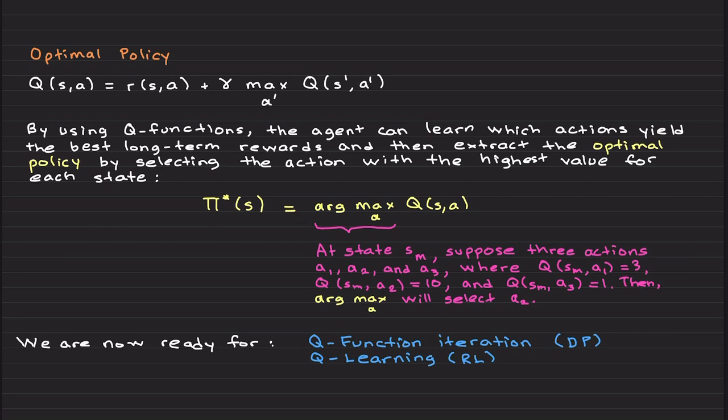Basically, by using Q functions, the agent can learn which actions yield the best long-term rewards and then extract the optimal policy by selecting the action with the highest value for each state. Mathematically speaking, what we mean by selecting the action with the highest value, this is the mathematical expression of what I just said.